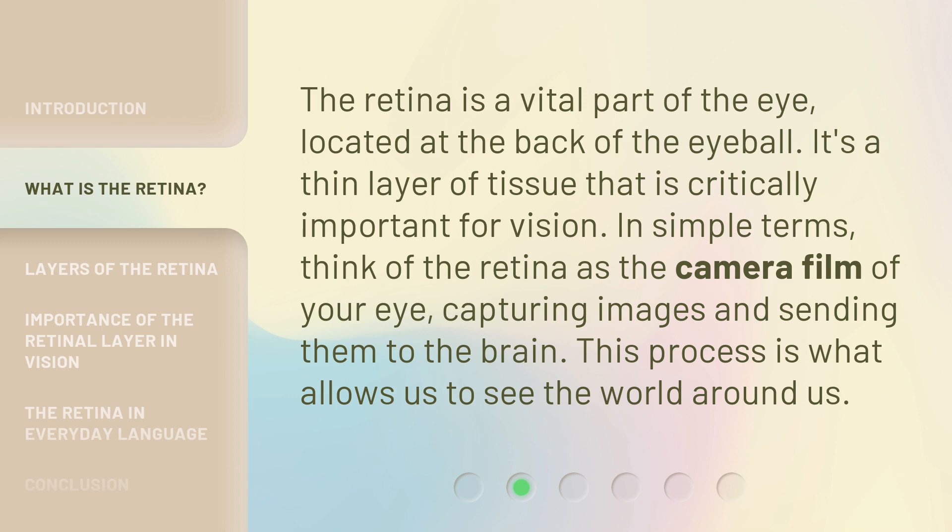The retina is a vital part of the eye, located at the back of the eyeball. It's a thin layer of tissue that is critically important for vision. In simple terms, think of the retina as the camera film of your eye, capturing images and sending them to the brain. This process is what allows us to see the world around us.